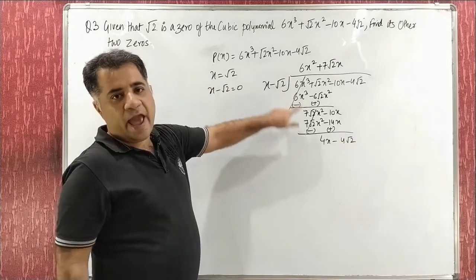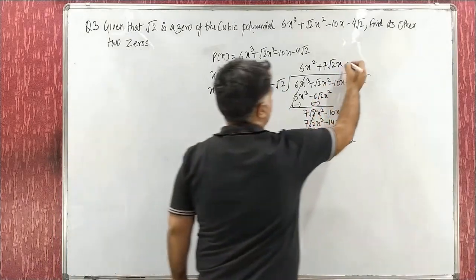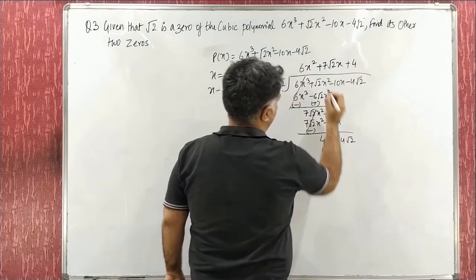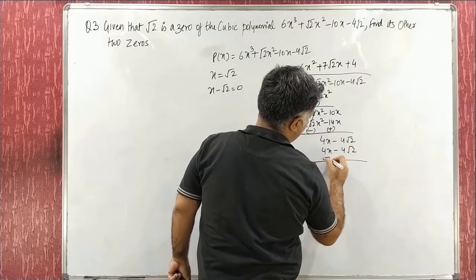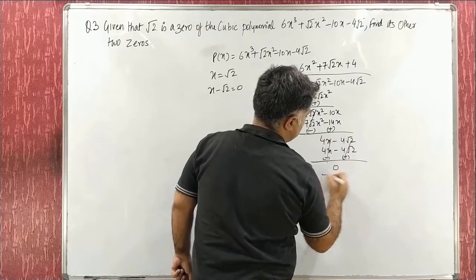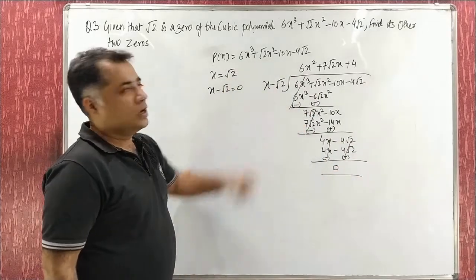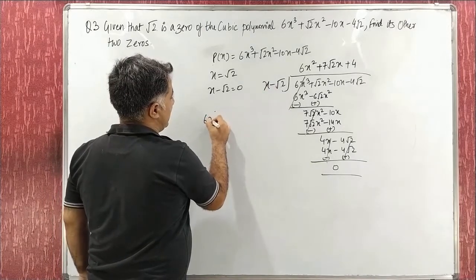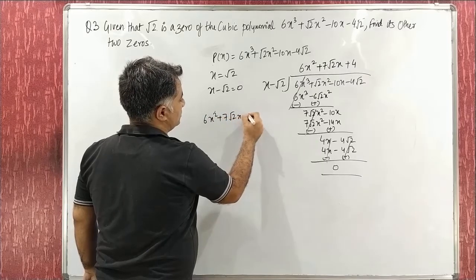Now what do we multiply x by to get 4? We multiply by 4, giving +4. So 4x − 4√2. Change signs, and the answer comes to 0. We got the remainder as 0. So q(x) = 6x² + 7√2x + 4.